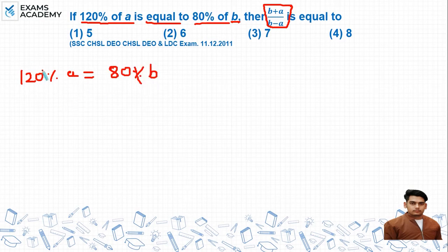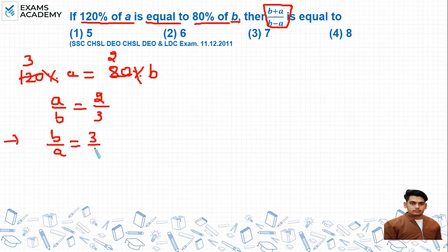Let's solve this. When we cancel the percentages, 40 cancels here, giving us 2 here and 3 here. So we get a by b equals 2 by 3. If I rearrange this, then b by a equals 3 by 2.